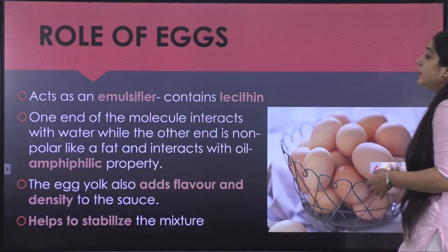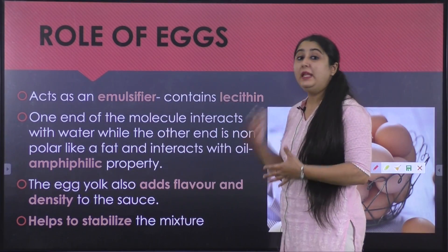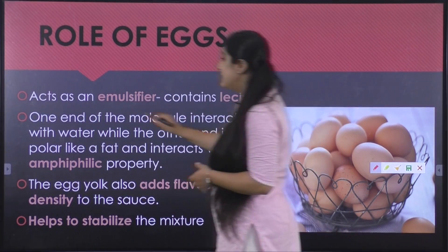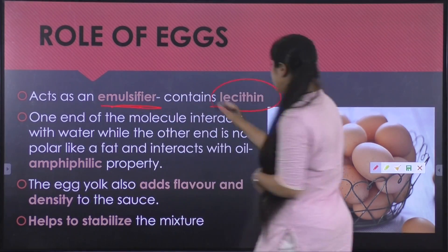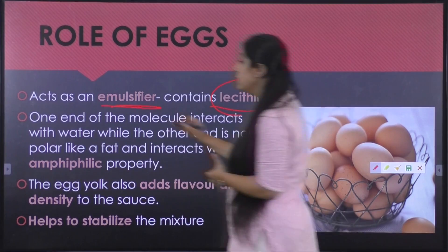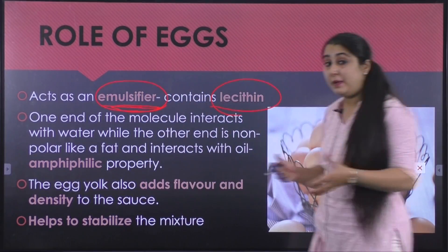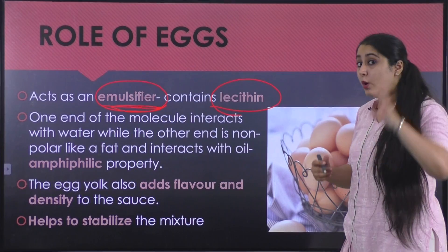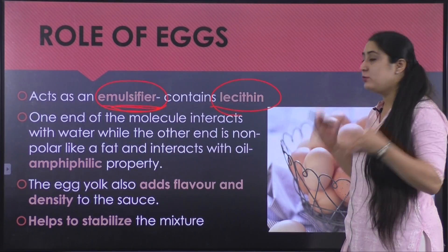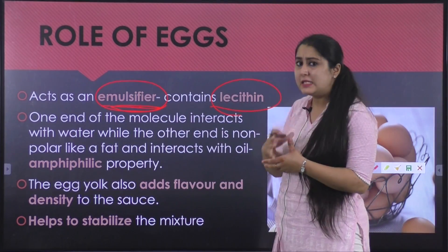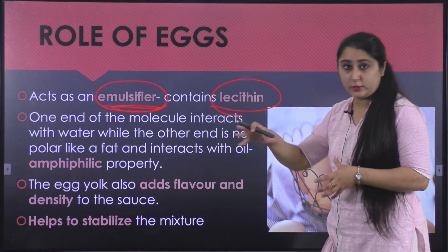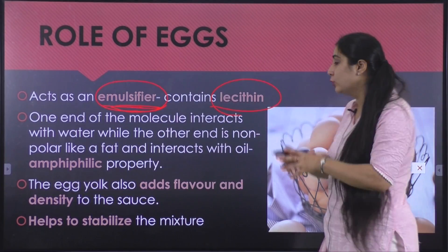Eggs are one of the main ingredients in mayonnaise. They act as an emulsifier because they contain lecithin. Lecithin helps in the formation of the oil-and-water emulsion. Oil and water are not miscible, and the reason we can mix them to form an emulsion is the presence of an emulsifier that contains both kinds of bonds — one bonding to the water and one bonding to the fat — linking both together.